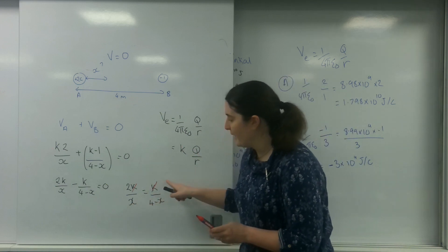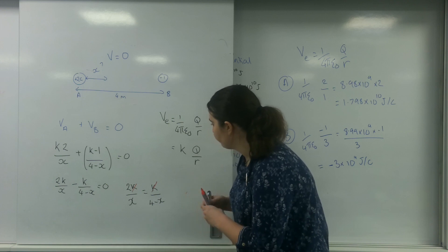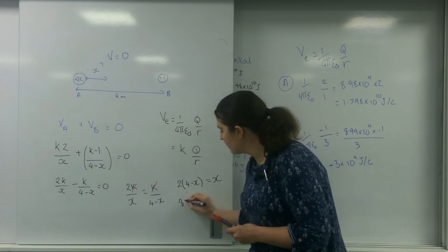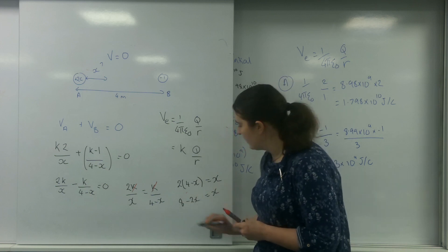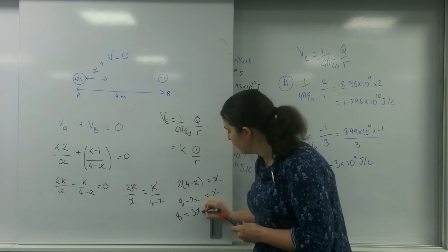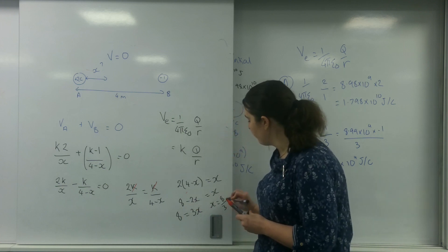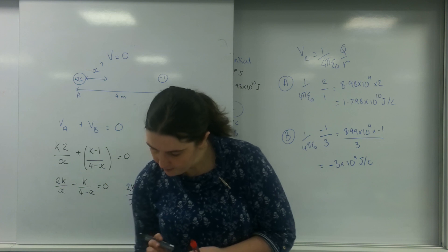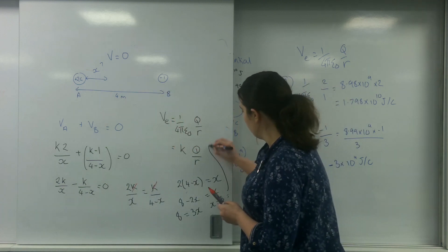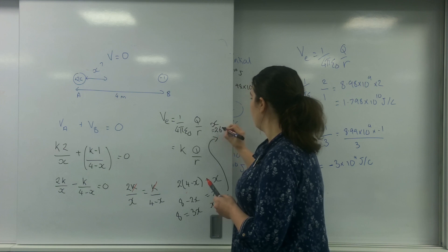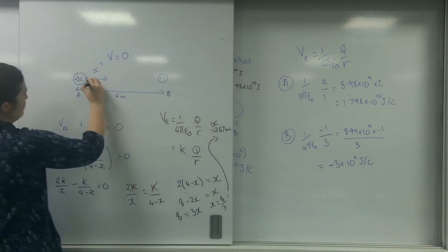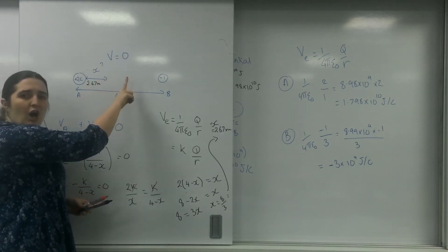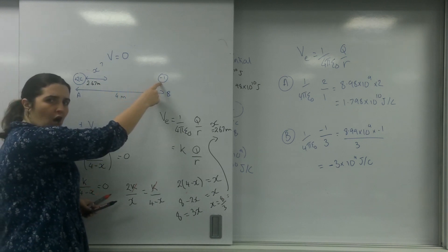Cross-multiplying, I bring the X and (4 − X) across: 2(4 − X) = X, giving 8 − 2X = X, so 8 = 3X, and therefore X = 8/3 = 2.67 metres. This distance of 2.67 metres makes sense — it's slightly over the halfway point because the minus 1 coulomb charge is much smaller in magnitude.